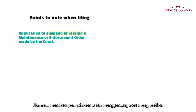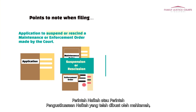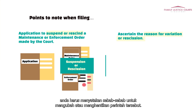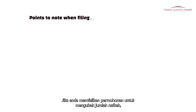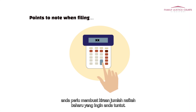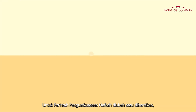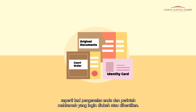What should you prepare before filing an application to vary, suspend, or rescind a maintenance or enforcement order made by the court? You need to ascertain the reason for variation or rescission. If you are filing an application to vary the maintenance amount, you need to calculate the new maintenance amount you are requesting for. To file for variation or rescission, you need relevant documents like your identity card and the court orders sought to be varied or rescinded.